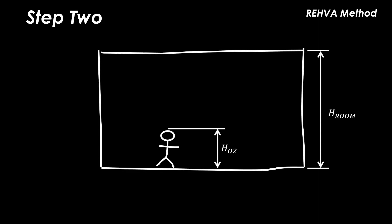In step two we simply need to establish the total height of the room and the height of the occupied zone. Our classroom example is ten feet high and has an occupied zone height of three and a half feet as the classroom occupants will be seated for most of the time.